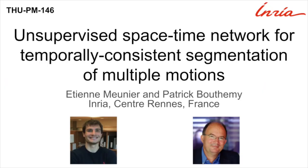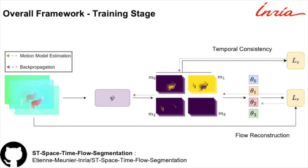My name is Etienne Meunier, and today I'm presenting our work, Unsupervised Spacetime Network for Temporally Consistent Segmentation of Multiple Motion, done during my PhD at INRIA. This work aims to perform unsupervised motion segmentation in sub-sequences using a 3D convolutional network. The main idea is to segment a small video volume instead of one frame, as done in previous work. This improves segmentation as we can distinguish between motions that look similar but diverge in the short term, and it allows us to output coherent motion labels within the sequence. Our network takes a sub-volume of optical flow fields as input and returns a segmentation volume with consistent labels for each class, evaluated for both fidelity to the input flow field and temporal consistency.